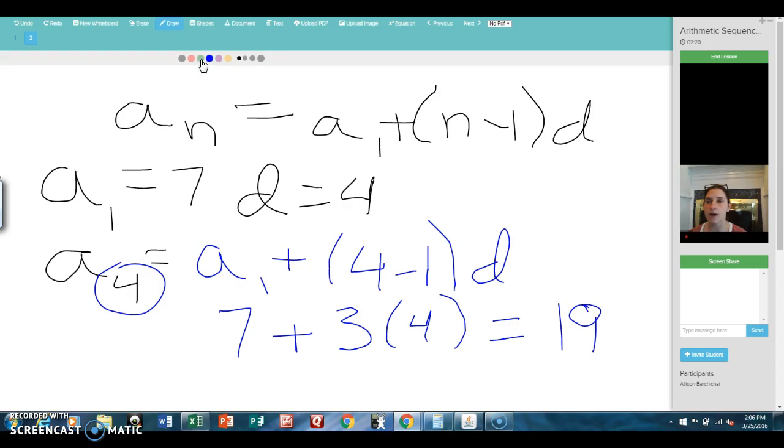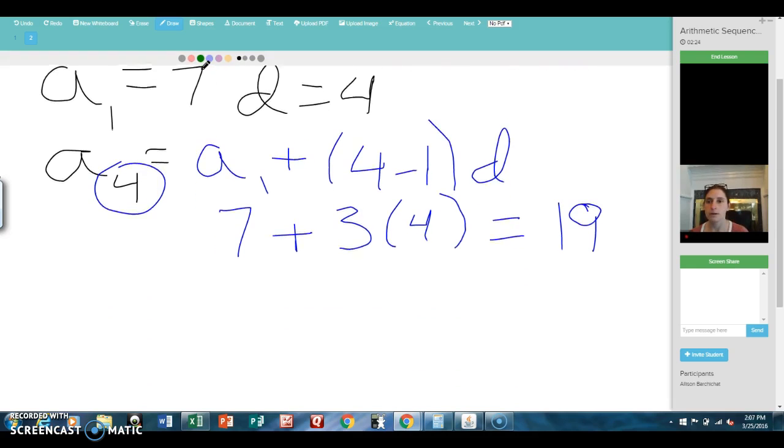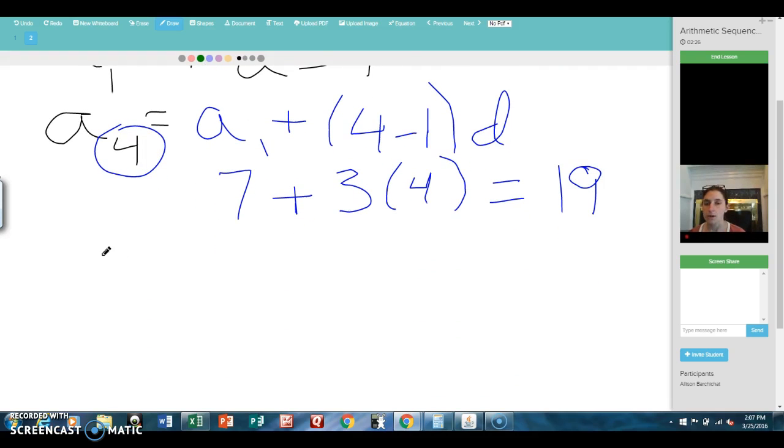We can check this by writing out a couple of terms for the problem. Let me show you what I mean. So we started with the first term being 7, and each time we were adding 4. So the next number would be 11, then 15, then 19, and this is the fourth term, which is what we got with our formula.